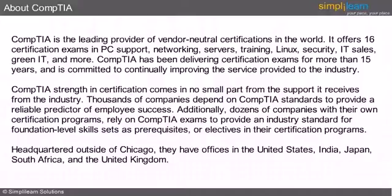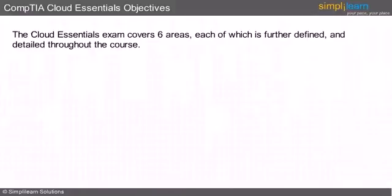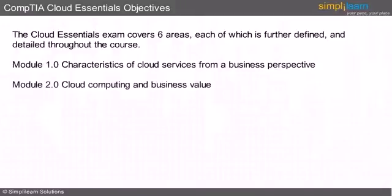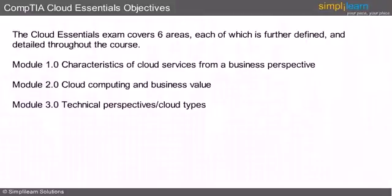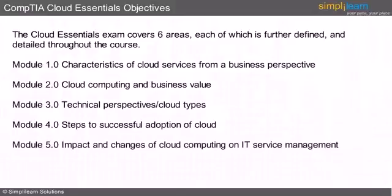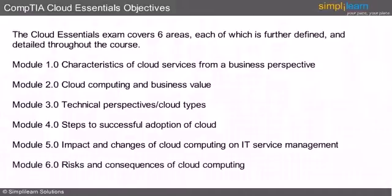Next we will understand the essentials of CompTIA cloud computing. The Cloud Essentials exam covers six areas, each of which is defined and detailed throughout the course. They are: the characteristics of cloud services from a business perspective, the business value offered by cloud computing, the technical perspectives and challenges involved in cloud computing, steps to successful adoption of cloud, impact and changes of cloud computing on IT service management, and the risks and consequences of cloud computing.